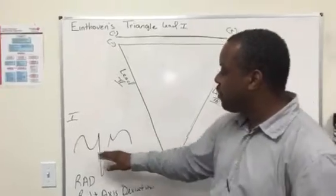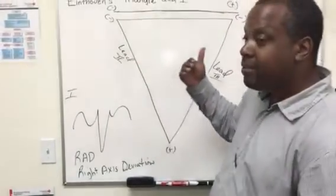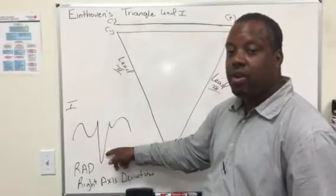So on the right axis deviation, you've got retrograde transmission. So instead of the current going negative to positive, it's going positive to negative. So you get a deflection, a negative deflection on the QRS complex.